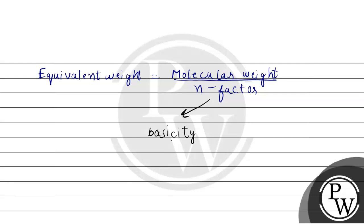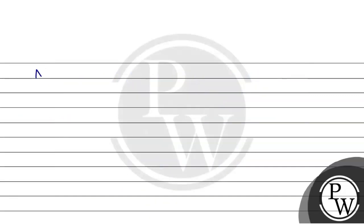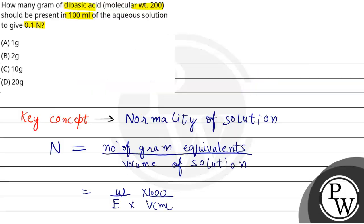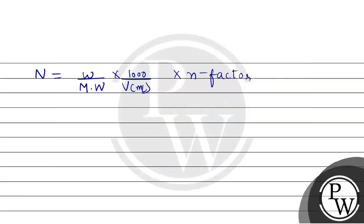Basicity means how many H⁺ ions one molecule of the acid can donate. So for an acid, n-factor equals its basicity. Now combining the formula: normality equals weight divided by molecular weight, multiplied by 1000 divided by volume in mL, multiplied by n-factor. Here we need to find the weight. Normality is given as 0.1.